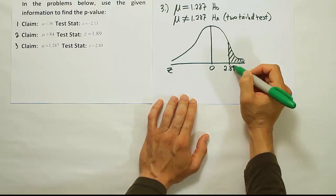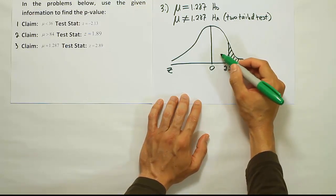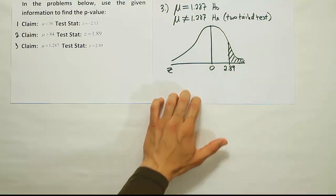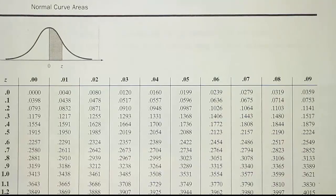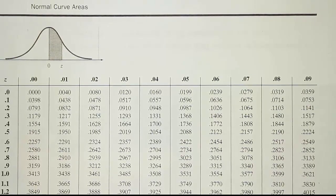So let's go to the Z table now, look up 2.89, get our area for this white space, and then we'll find the tail area. And then we have to remember to double it. Okay, so we're going to the Z table now to look up 2.89.